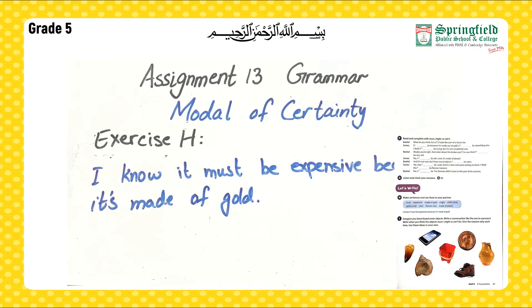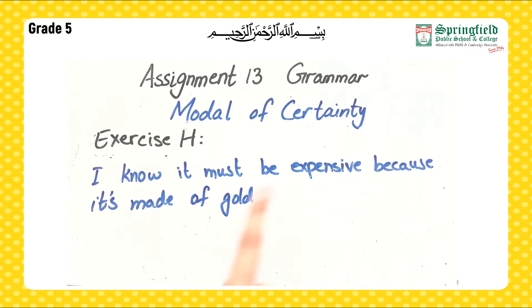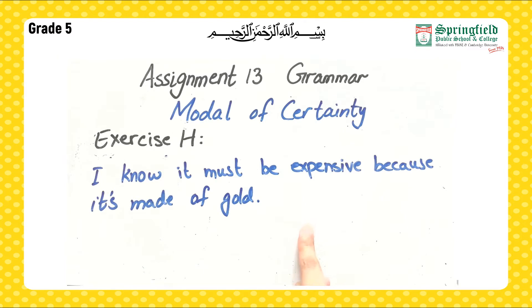Exercise H: Make sentences using the words given in the box and say them to your partner. The words are: must, expensive, made of gold, might, child's shoe, quite small, can't, and made of plastic. Example: 'I know it must be expensive because it's made of gold.' Use these words to make your own sentences.